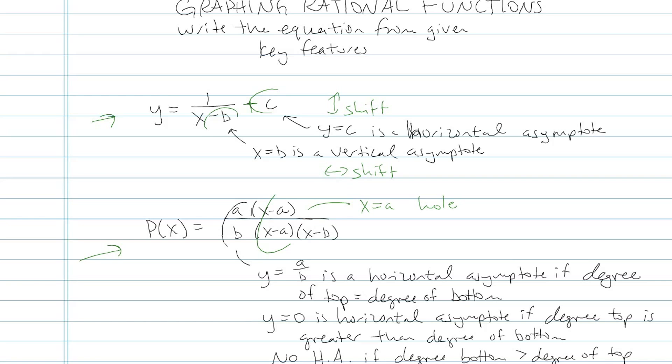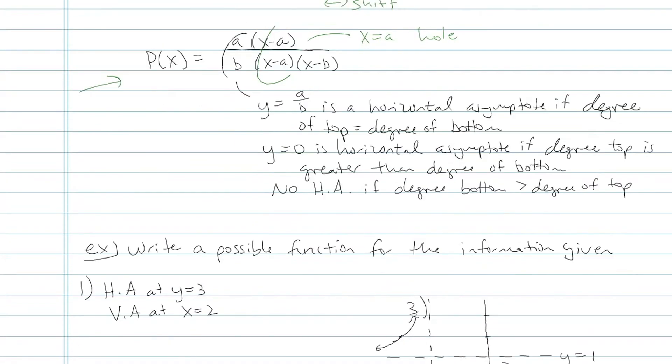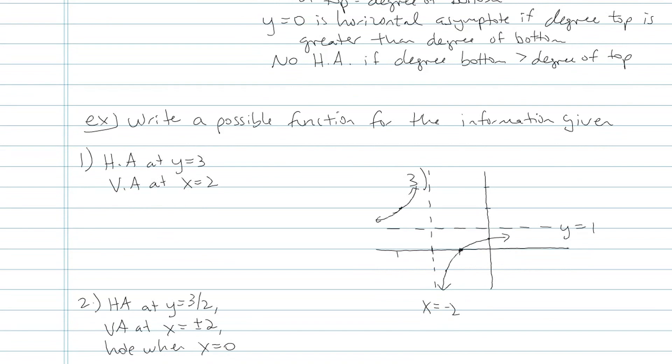Let's try some. Write a possible function for the information given. Horizontal asymptote at y equals 3, vertical asymptote at x equals 2. Since I don't have any holes, I'm thinking I'm going to use that first equation, because that one's much simpler in my opinion. On the top, I'm going to have 1. On the bottom, I'm going to have x minus my vertical asymptote. So on the bottom here, I'll have x minus 2. And then out here for plus c, I'm going to put plus my y asymptote.